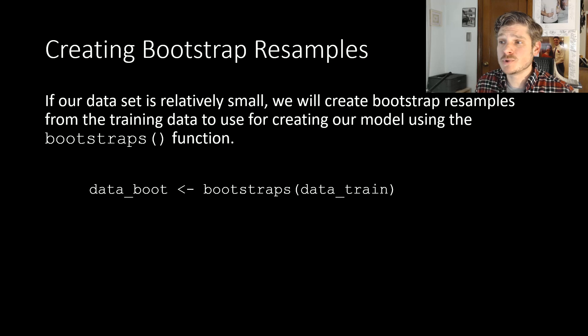Now, if we need to create our bootstrap resamples, and again, typically this is if our data set is small, our bootstrap resamples have to come from our training data. And so we just use the bootstraps function. And again, I think it's best to be as descriptive as possible. You are going to create lots and lots of objects when you're doing this modeling. There's going to be tons of objects in your environment. And so, again, data_boot for my bootstrap samples. And again, it's just the function bootstraps. And again, you're running that on your training data.